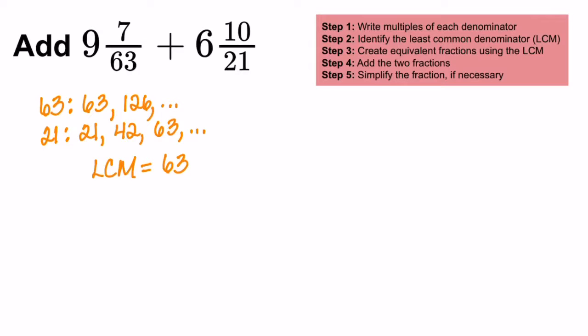If you notice, we only need to change the denominator of one of our mixed numbers. Let's take the 6 and 10 over 21. We're going to keep the whole number of 6, but we're going to change the fraction portion to have a denominator of 63. So let's multiply the 21 and the 10 by 3. So now we have 6 and 30 over 63.